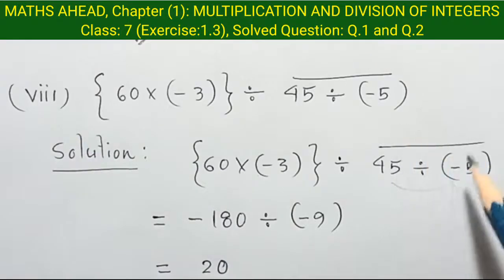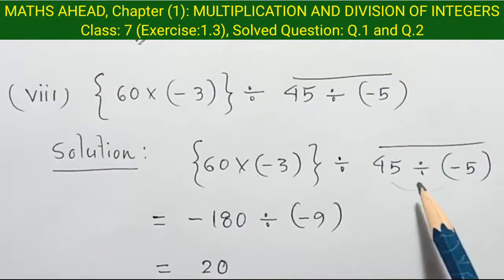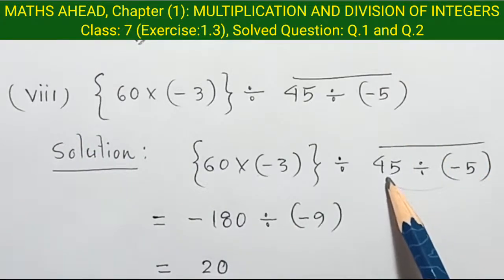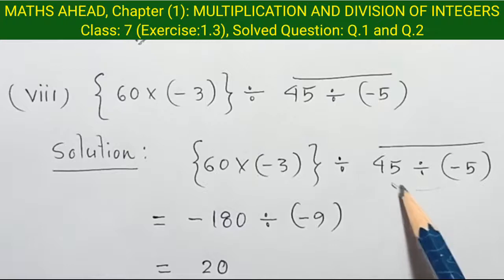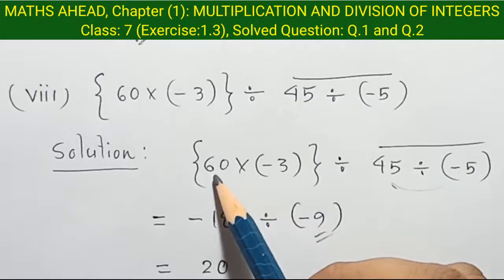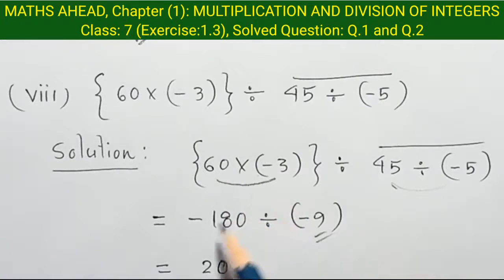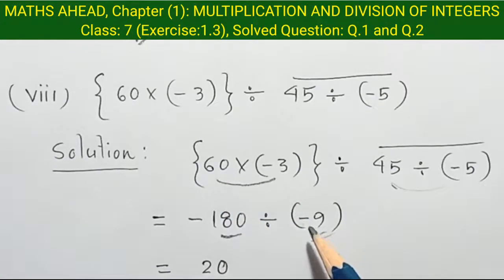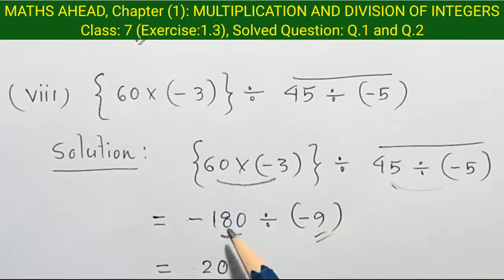Question 8: we need to multiply the bar. When we divide 45 by minus 5, so minus 9 will be minus 9. And later, we multiply 60 to 60, so it will be and minus 130 and 180. Then minus and minus became plus. So between 9 and 180, our value will be 20.